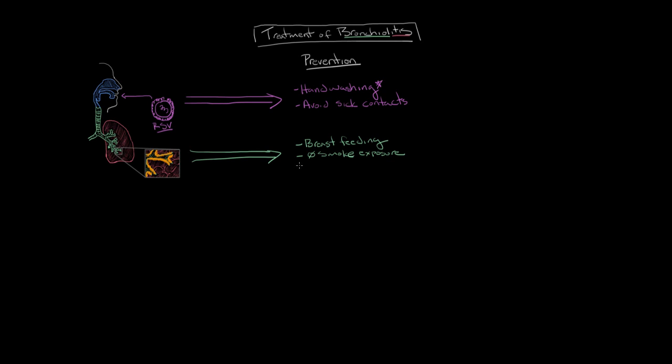The last one I want to talk about here is a medication known as palivizumab. Now palivizumab is a special medication and it's reserved only for children who are at very high risk of not only developing bronchiolitis, but developing really severe disease. The children who qualify for palivizumab are children who are born premature or children who have pre-existing lung or heart disease.